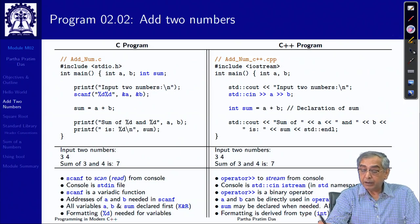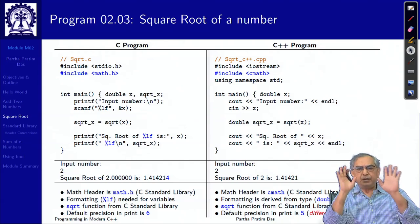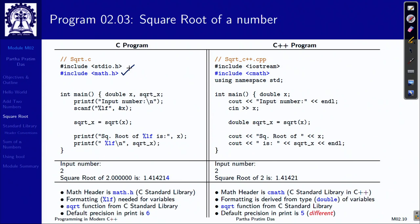Let us move to the next example, which is finding the square root — again a very simple program. Besides the input-output, for finding square root you need to include math.h, the mathematical library in the C standard library. Equivalently in C++ you include cmath. Anything you have in the C standard library, you can use that library function in C++ by including the library as 'c' followed by the library name, without the .h — so math.h becomes cmath, stdio.h becomes cstdio, and so on.